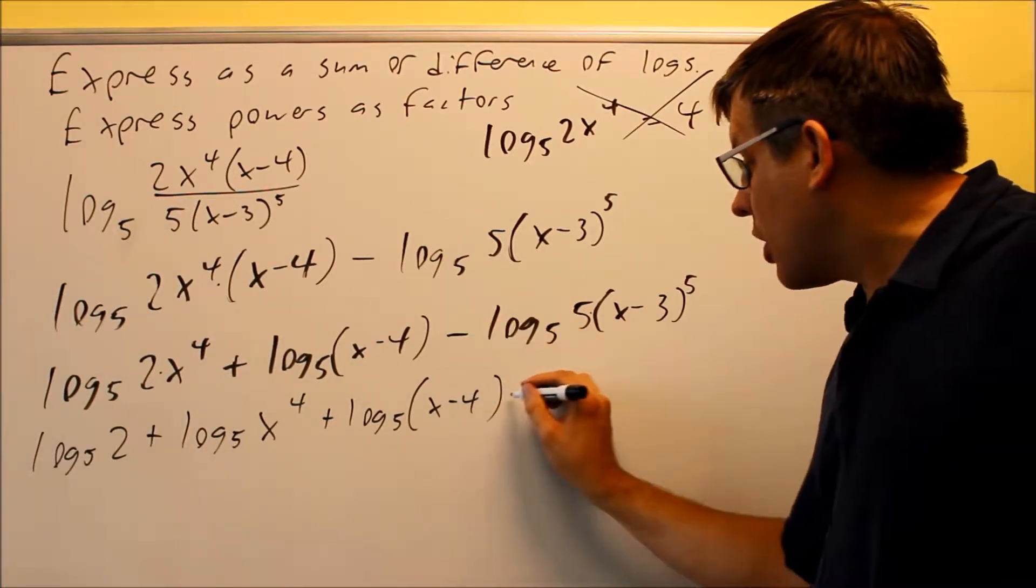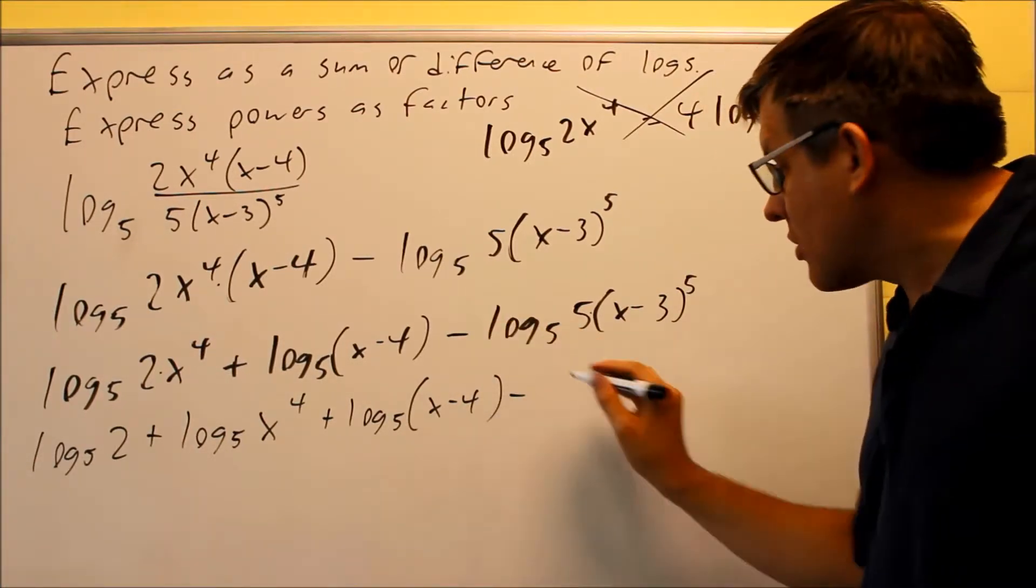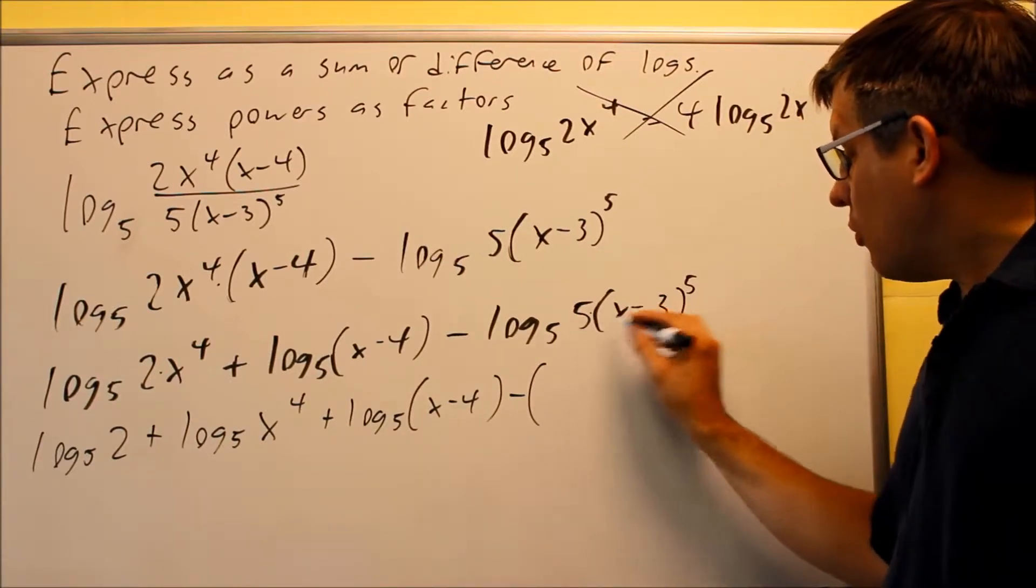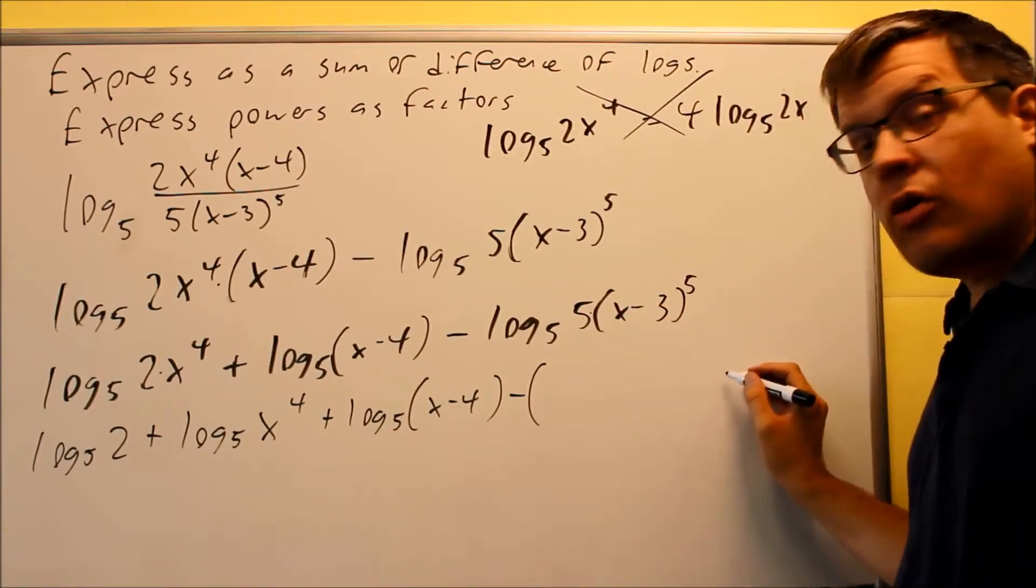Now, we've got to be careful because we've got a minus sign in front. So the minus sign, when we separate it into a multiplication, these two things, all that's going to go inside the parentheses.